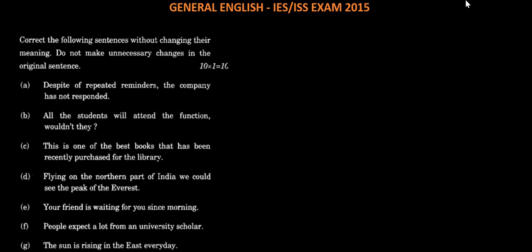The last part gives us a few sentences that we have to correct grammatically. The first one says: Despite of repeated reminders, the company has not responded. Of cannot come after despite. It should be: Despite repeated reminders, the company has not responded. The second one: All the students will attend the function, wouldn't they. Wouldn't is not the appropriate verb here. Won't they will be the correct one. The third one: This is one of the best books that has been recently purchased for the library. Best books, so there are more than one books. Has cannot be the verb. That have been recently purchased for the library. Have qualifies the best books.